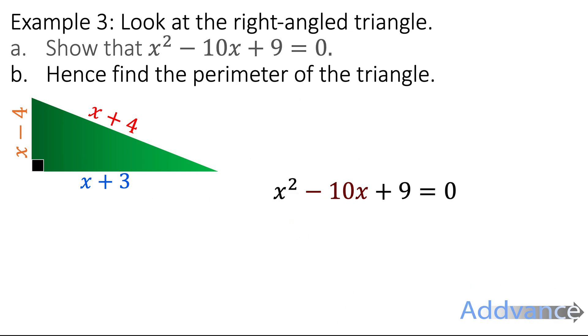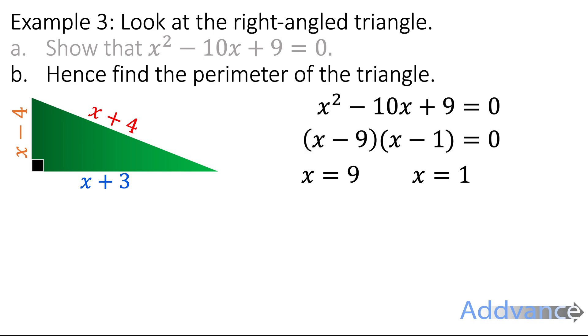Now it says find the perimeter of the triangle, so you're going to use the quadratic to find out what x is. We factorise, and then we make each bracket equal to 0. That gives us either x = 9 or x = 1.